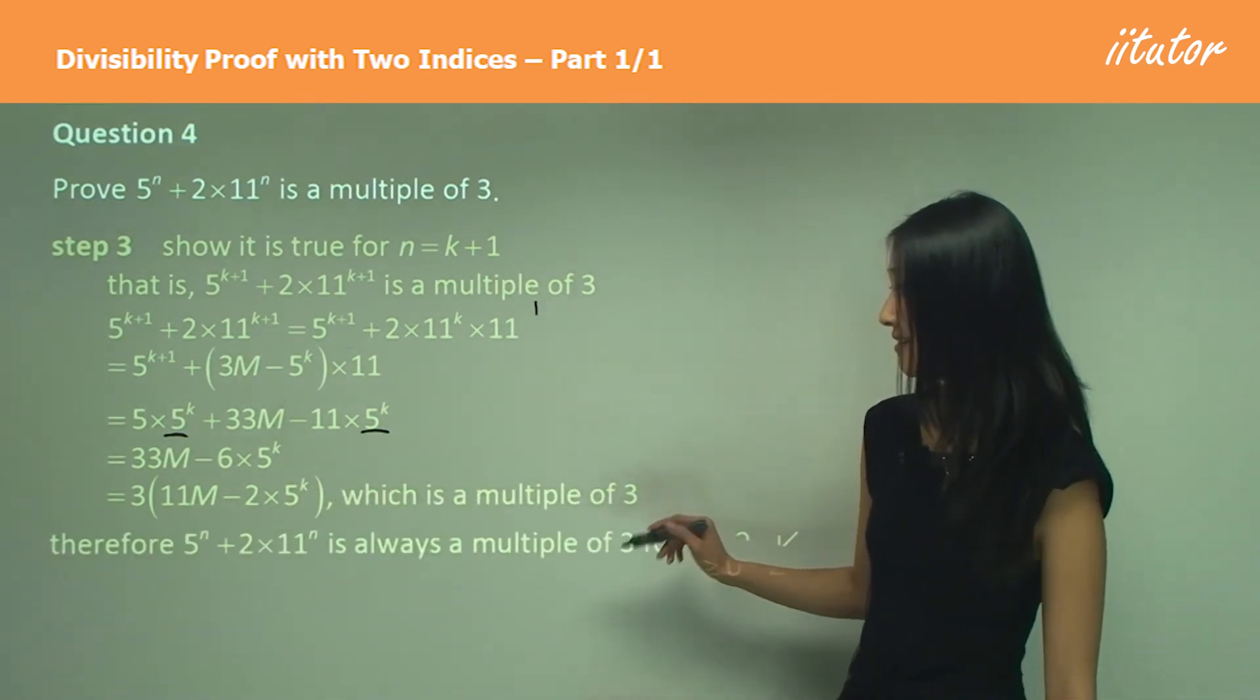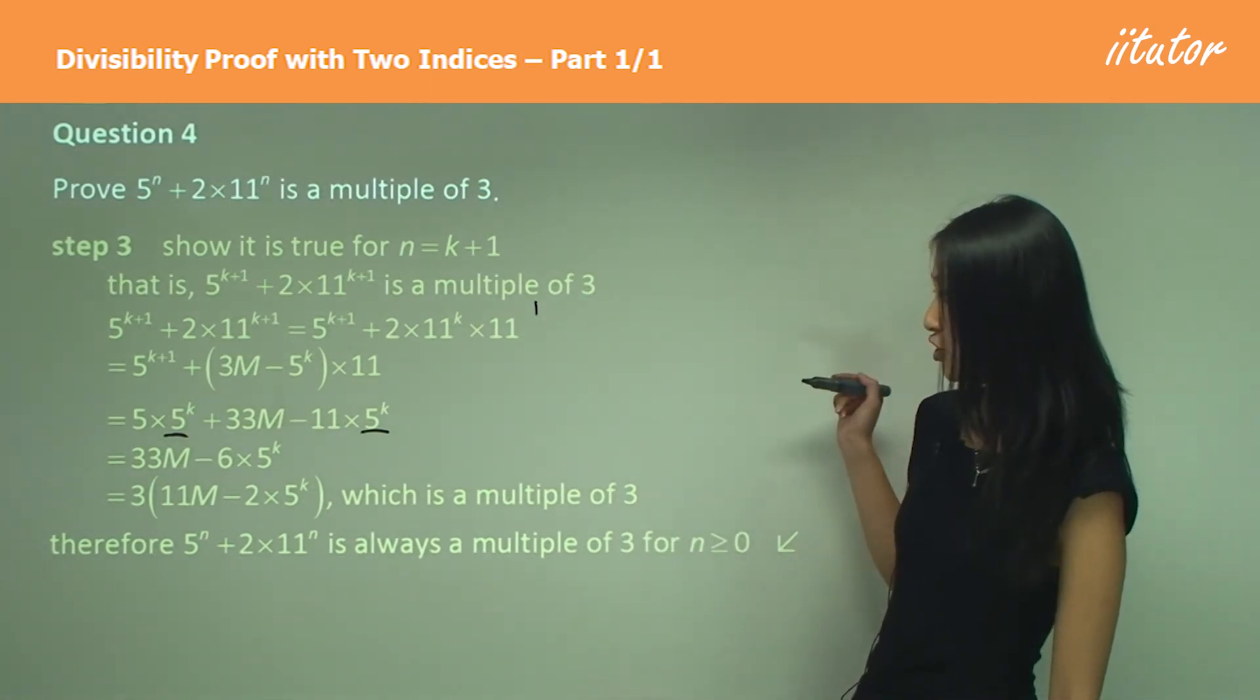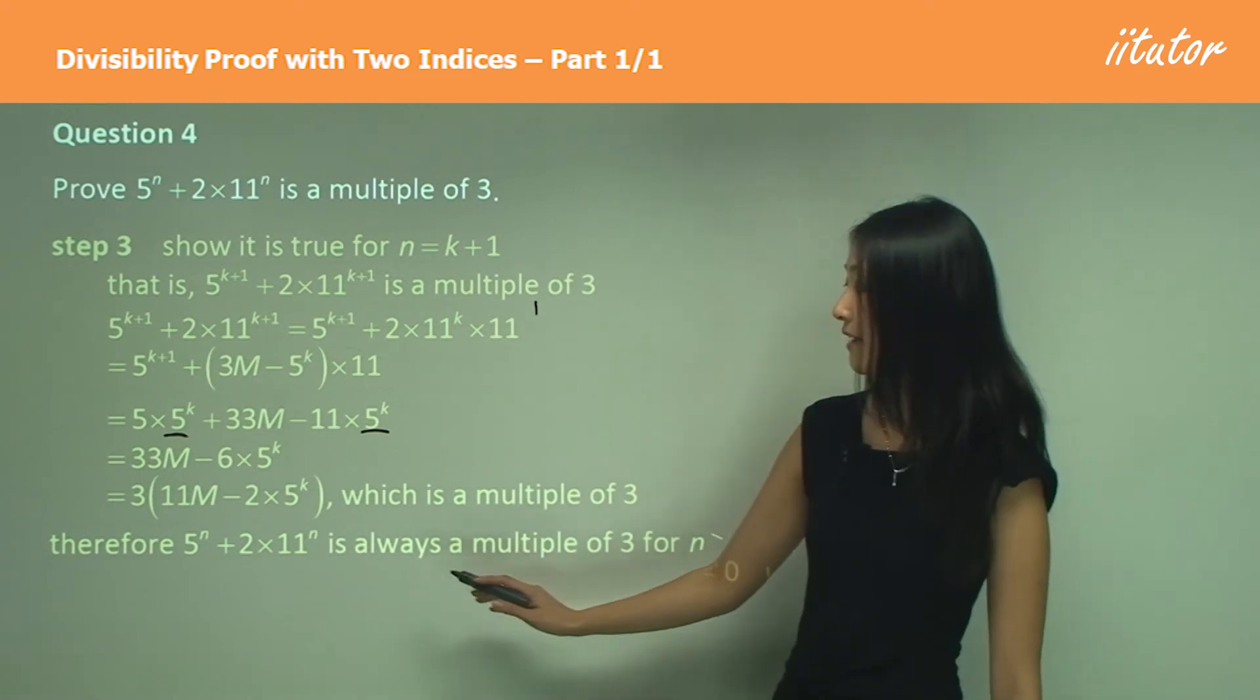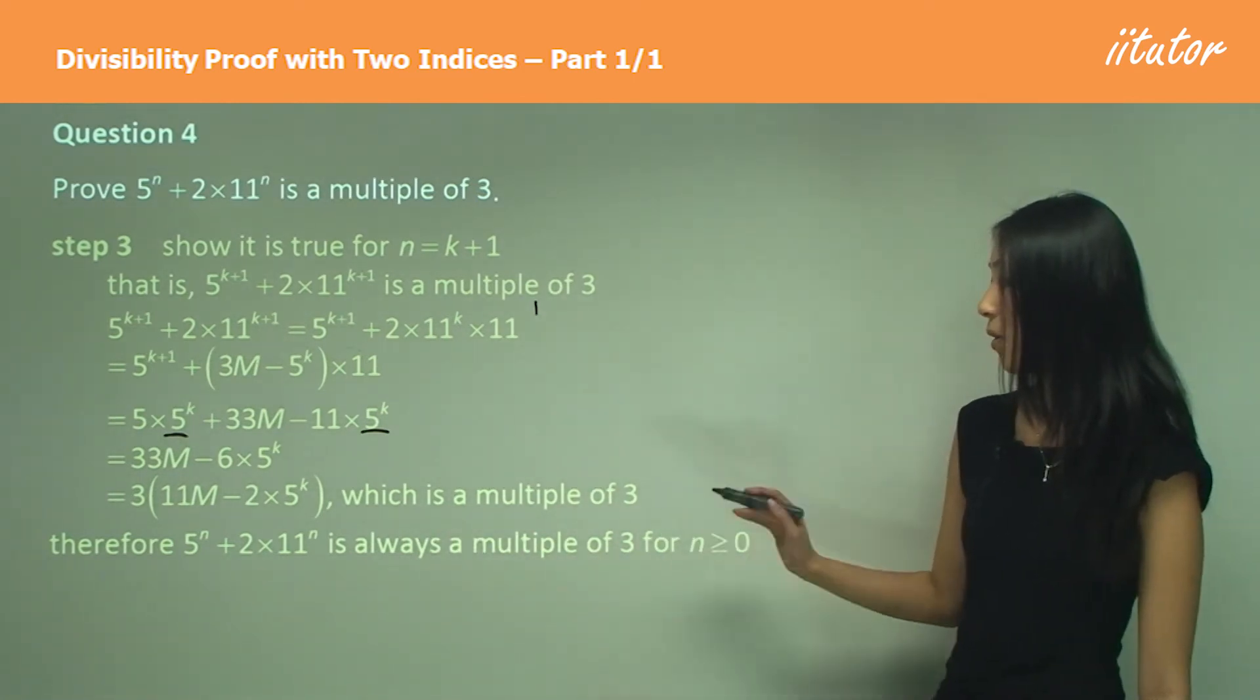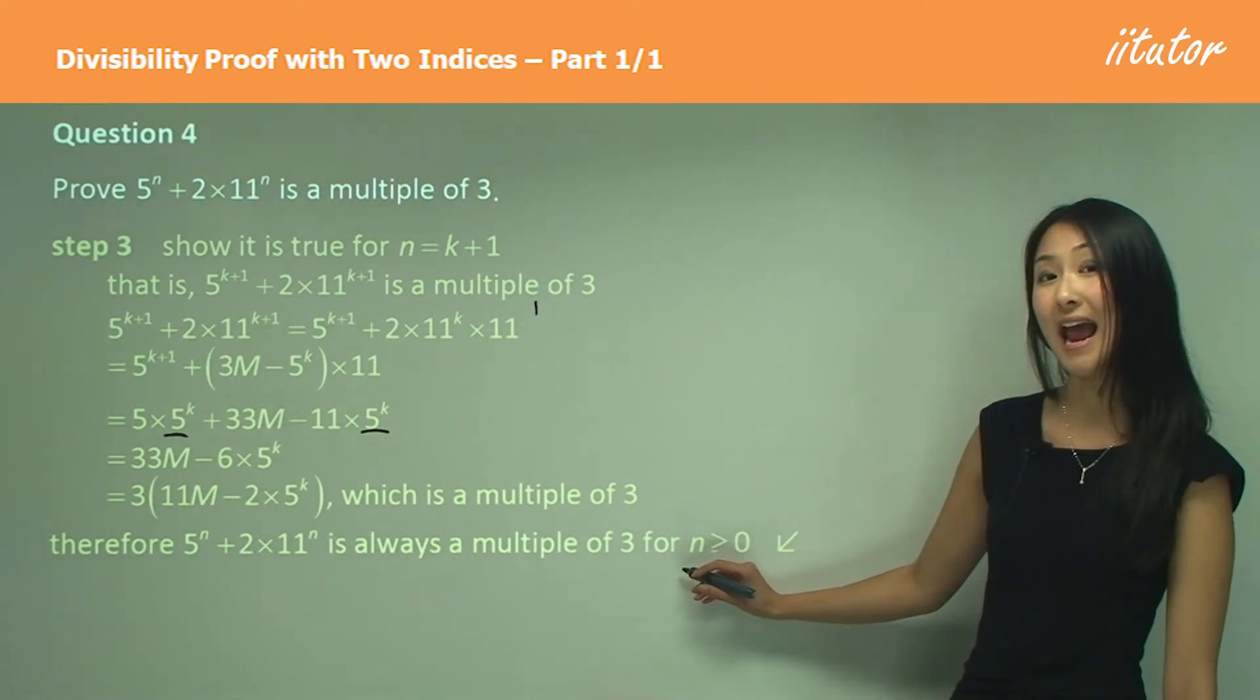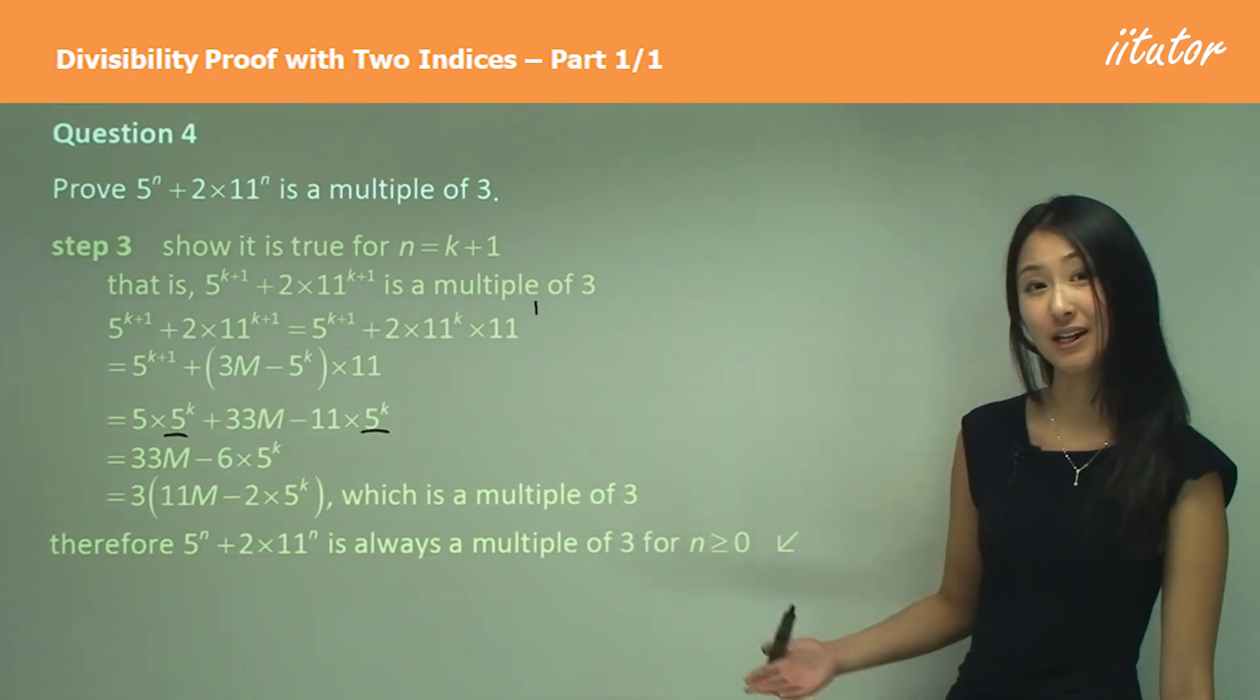So yes, we can say therefore it is true for n equals k plus 1. The conclusion for this is: therefore, 5^n plus 2 times 11^n is always a multiple of 3. In this case, it's for n is greater than or equal to 0, because remember we started off with 0.